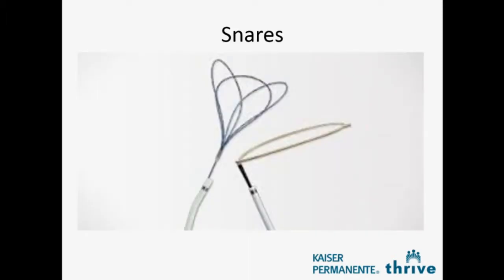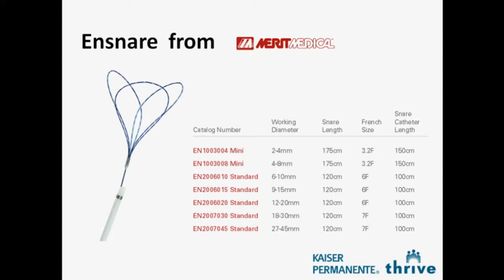Key pieces of equipment. Snares are something you'll need to become very familiar with. There are two general types: end snares, which you see on the left, and gooseneck snares on the right. These come with a catheter that is essential to grasp what you're trying to grasp. You don't have to use the catheter that comes with it — you can use guide catheters with directionality to angle your snares and reach where a straight catheter wouldn't. Think ahead of time about the length of the snare shaft and catheter so you can reach, close, and clear the long sheath you're delivering through.